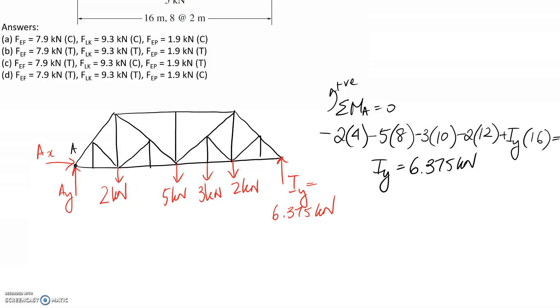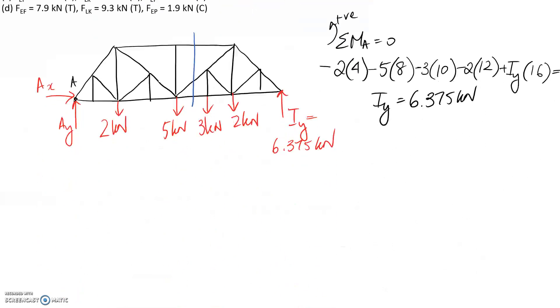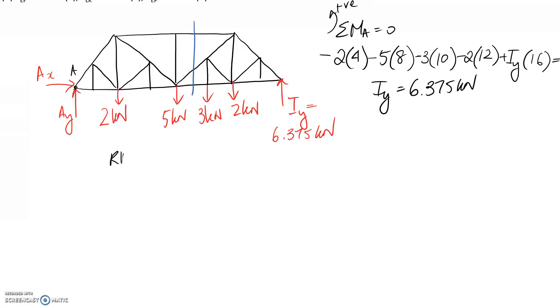You could go back and get AX and AY and then take the left, but that's an extra step. Where we want to cut is through the members that we're interested in finding the force of. That's through these three here. Remember, for method of sections, you want to cut through a maximum of three unknowns, otherwise you're not going to be able to solve it directly. I'm going to take the right-hand side. If we redraw the free body diagram of just the right-hand side, carrying across the forces, we've got 6.375, 2 kN, and 3 kN. Then we've cut through these three members and exposed the internal force. I'm going to draw them all in tension.